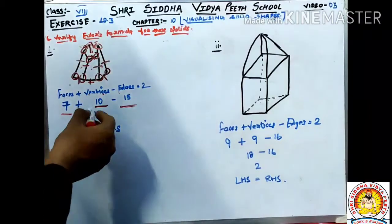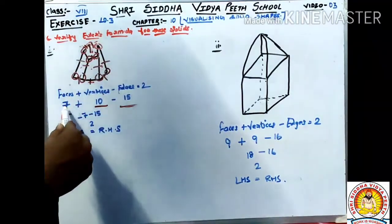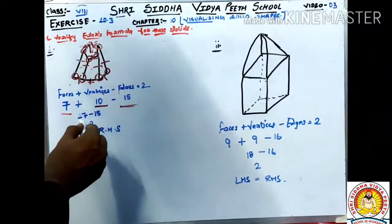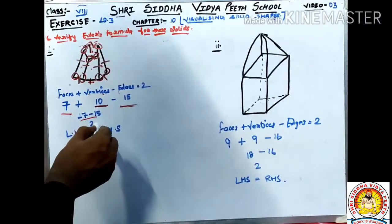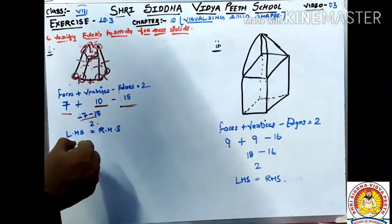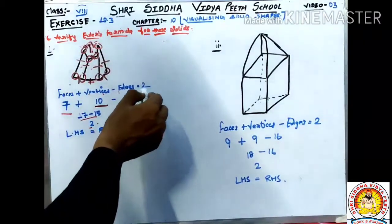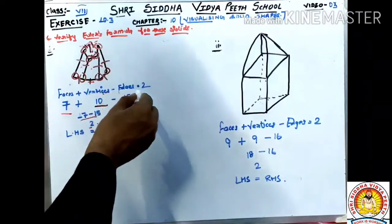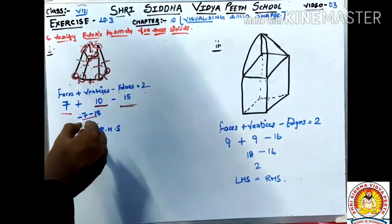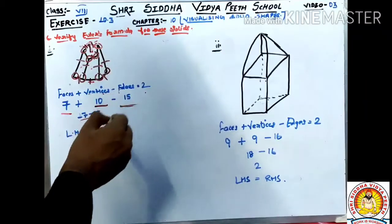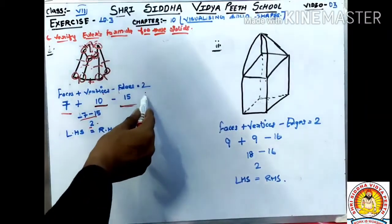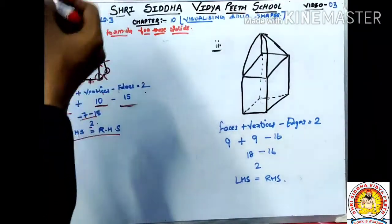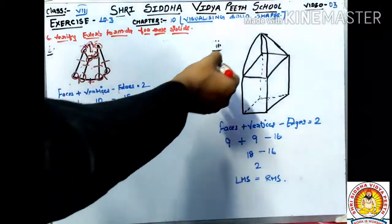Now we verify using Euler's formula. Faces plus Vertices minus Edges: 7 plus 10 equals 17, and 17 minus 15 equals 2. So LHS equals 2, which equals RHS. Euler's formula is verified for the first figure.